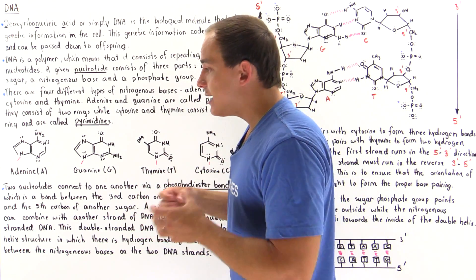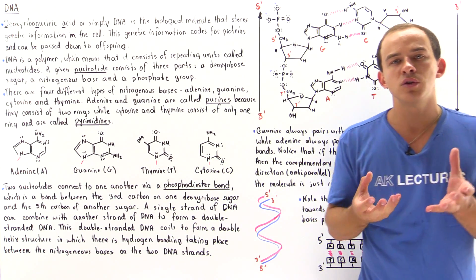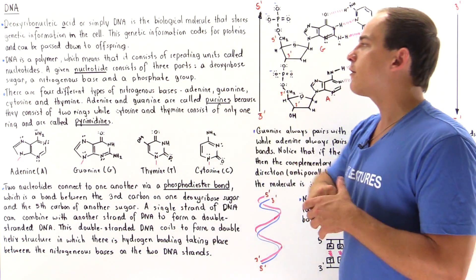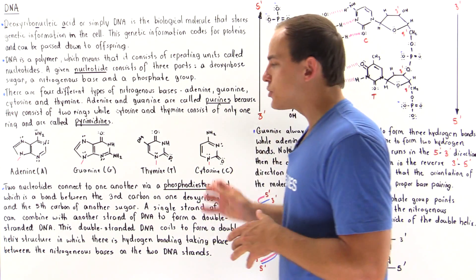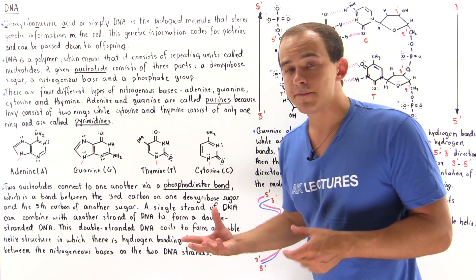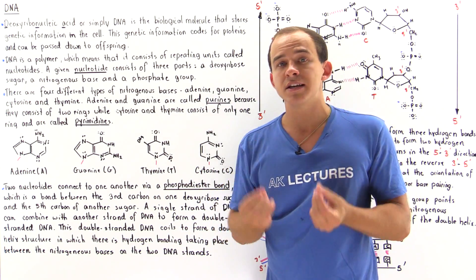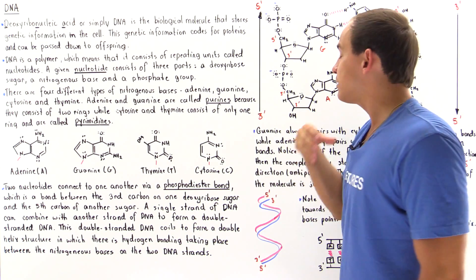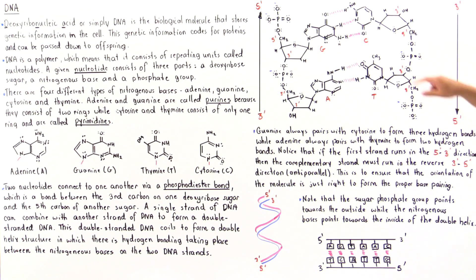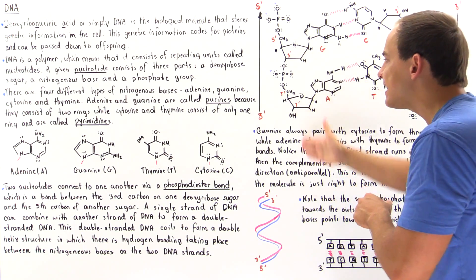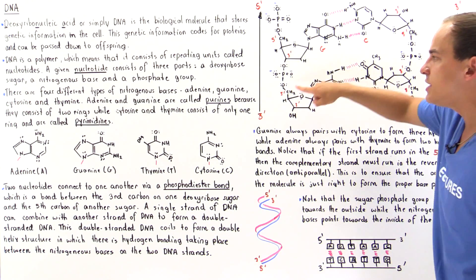In summary, DNA is a polymer molecule that contains nucleotides. Any given nucleotide consists of three sections: the sugar, the nitrogenous base, and the phosphate group. There are four different types of nitrogenous bases — the purines are adenine and guanine, while the pyrimidines are thymine and cytosine. The two anti-parallel single-stranded DNAs bond together via hydrogen bonds between adjacent nitrogenous bases: guanine always bonds with cytosine, and adenine always bonds with thymine. Individual nucleotides within each single strand are connected via phosphodiester bonds.